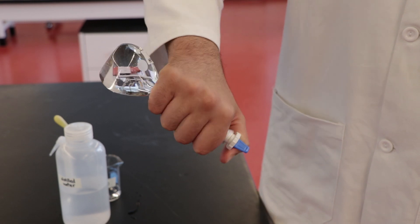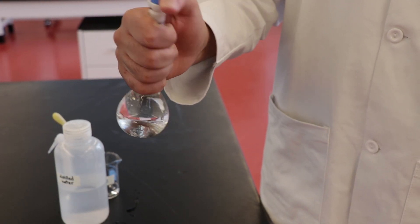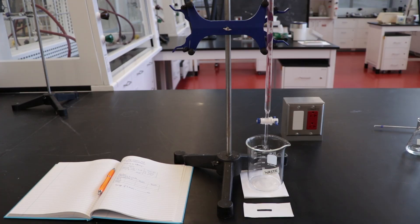Stopper the flask and invert 15 to 20 times to ensure thorough mixing of the acid throughout your standard solution. Next, prepare the burette for titration by rinsing and filling it with sodium hydroxide solution provided in the TA fume hood. For a more detailed explanation of how to set up the burette and pipetting and titration techniques, please watch the video in the description below.